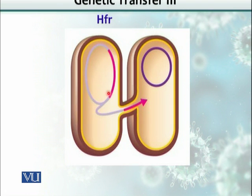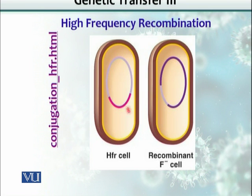As mentioned, the transfer begins from the middle of this fertility factor, and only some part — not the whole plasmid — is transferred. So this is a high-frequency recombination cell, and the recipient becomes a recombinant cell, but still remains F-negative because it did not acquire the whole F fertility factor.